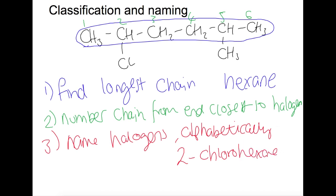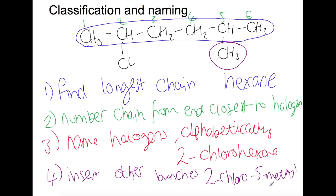Then we go on to have a look at the other branches that we have. So here we have a methyl branch. So we need to put that into the name as well. So now we have 2-chloro-5-methylhexane.